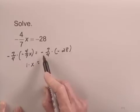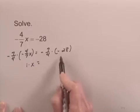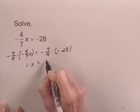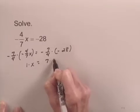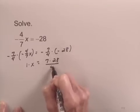On the right-hand side, I'm going to get a positive number. I have the product of two negative numbers, and that number is going to be 7 times 28 over 4.